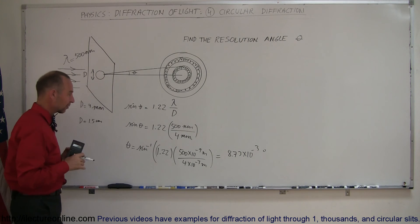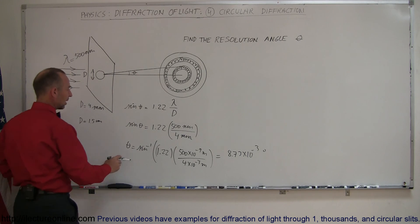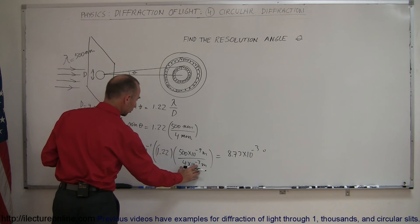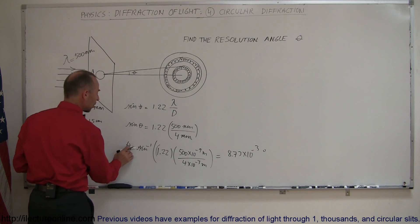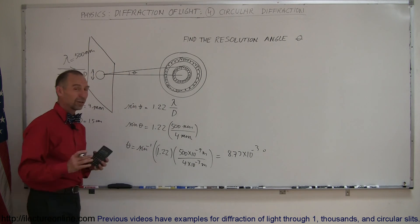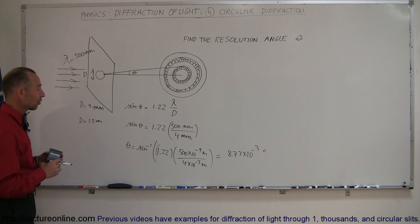You can see that when you plug in a larger D, then you get a much smaller angle right here, and so eagle vision is probably 3 to 4 times as good as human vision.